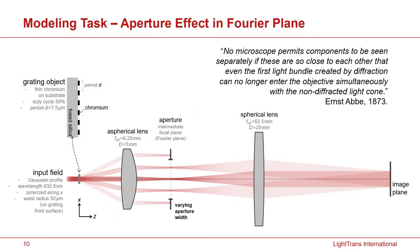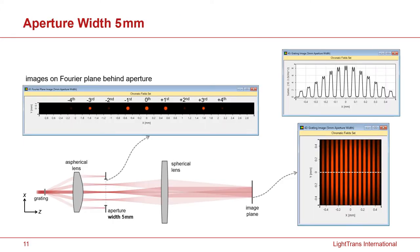Next, I'm going to move to a more complicated situation according to the prediction of Ernst Abbe. So he said, no microscope commands content to be seen separately if these are so close to each other that even the first light bundle created by the diffraction can no longer enter the objective. So let's have a look at this system. And to demonstrate this effect, we add an additional aperture with varying width inside the system between the two lenses.